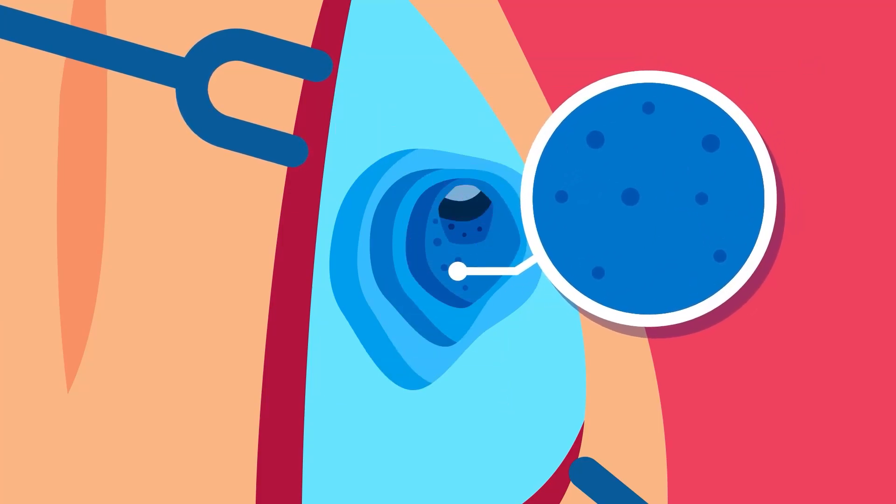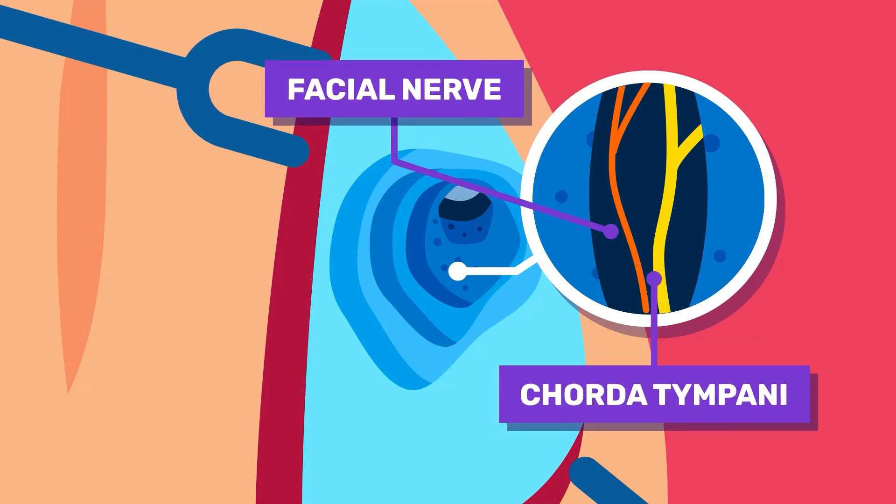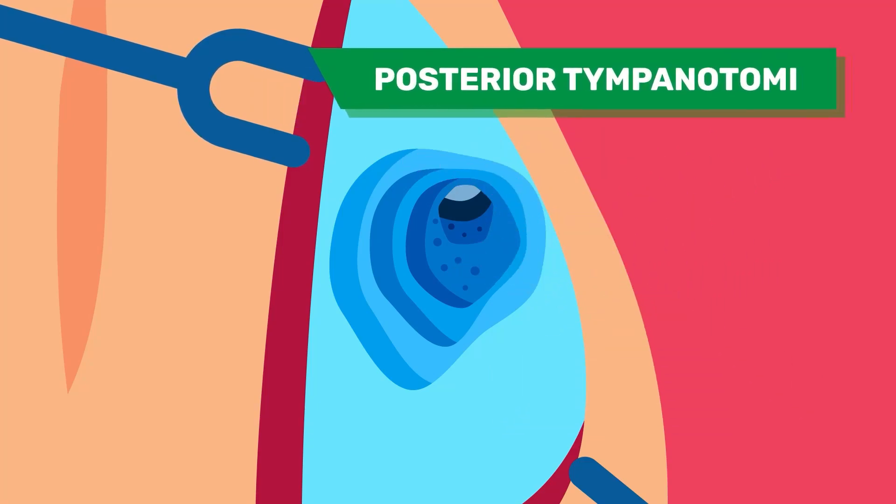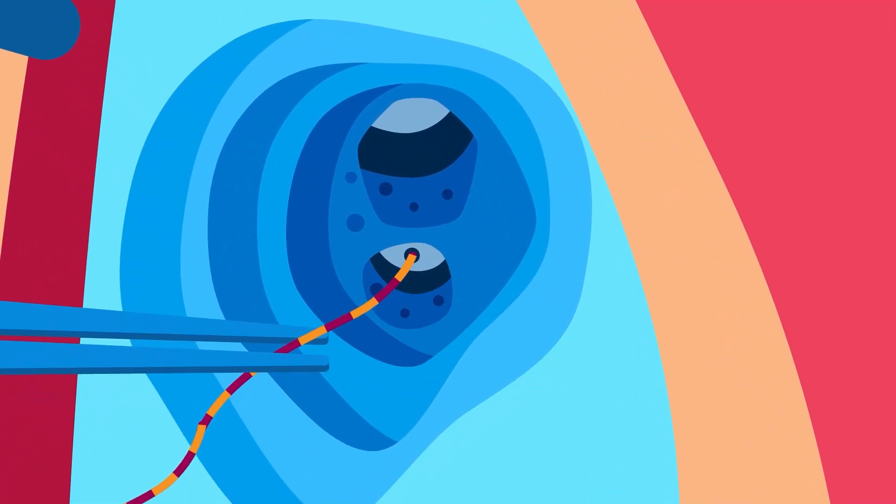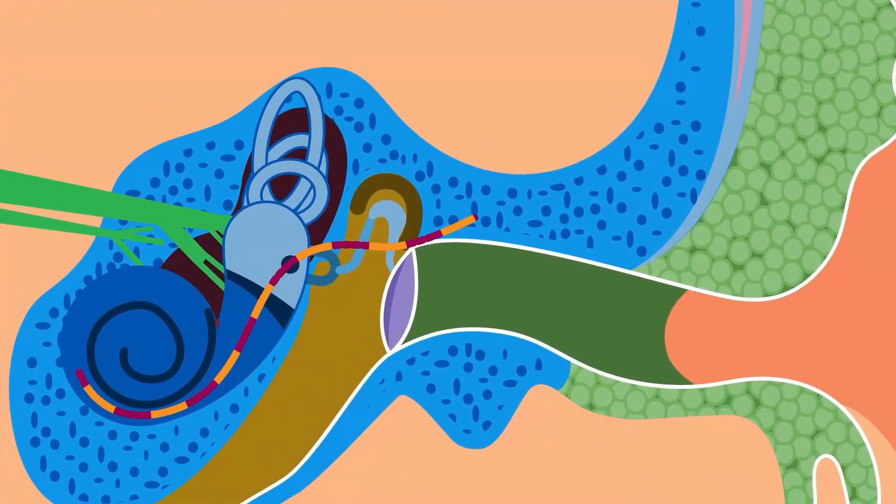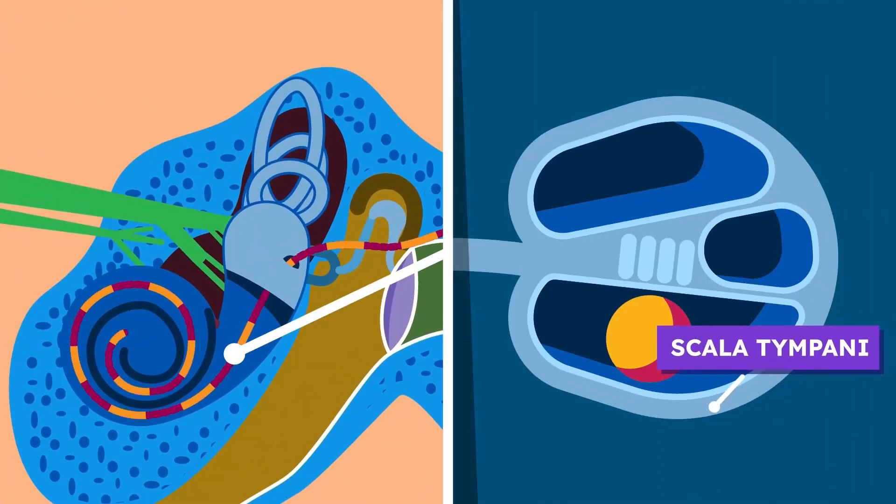After that, the surgeons locate the facial nerve and chorda tympani and preserve it. Using posterior tympanotomy, the facial recess between them is drilled until the round window can be accessed. The round window is the hole where the electrode will be inserted through the scala tympani until it reaches the end of the cochlea.